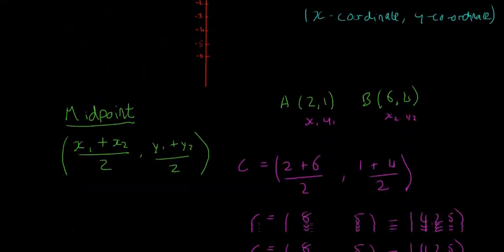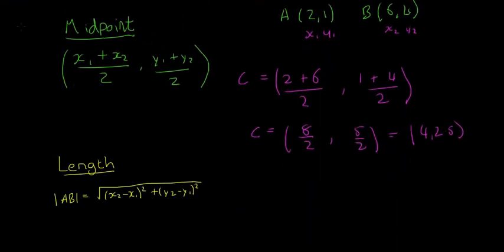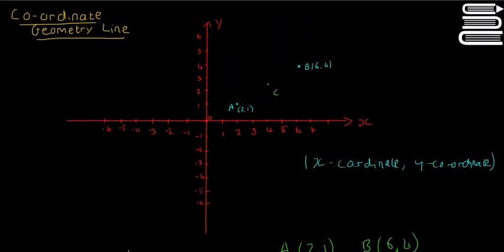The length formula is given there. Those two symbols mean the length between A and B is equal to √[(x₂ - x₁)² + (y₂ - y₁)²]. If we want to look at that on the graph, it's going to be how long is it between A here and B.